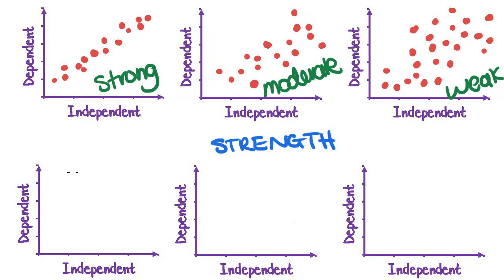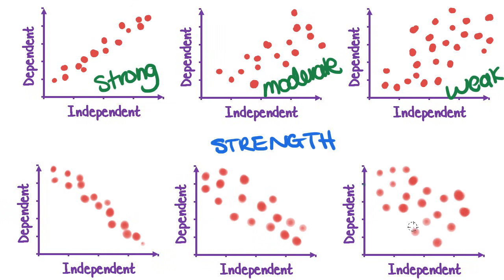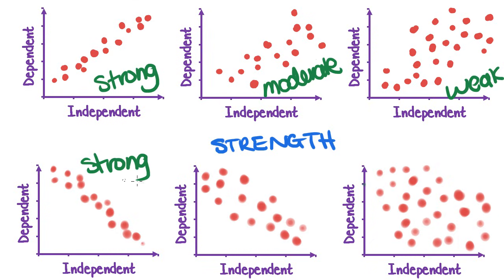It works the same for negative relationships. A very strong negative linear relationship has dots tightly following a downward line. A moderately strong negative linear relationship is similar but with more spread. A weak negative linear relationship still shows that as the independent variable increases the dependent variable decreases, but the dots are much more spread out. So you'd describe them as strong, moderate, or weak negative linear relationships.